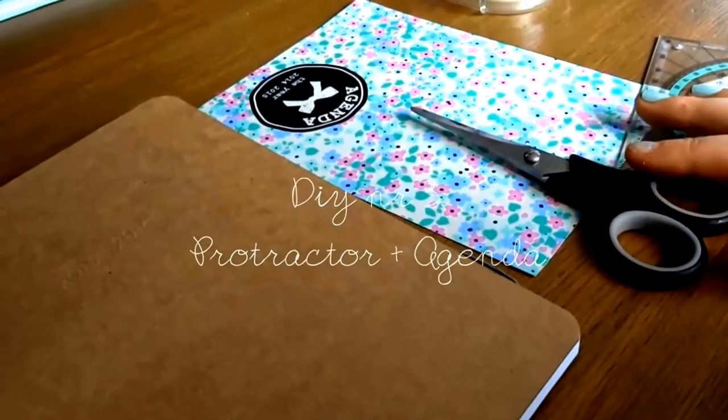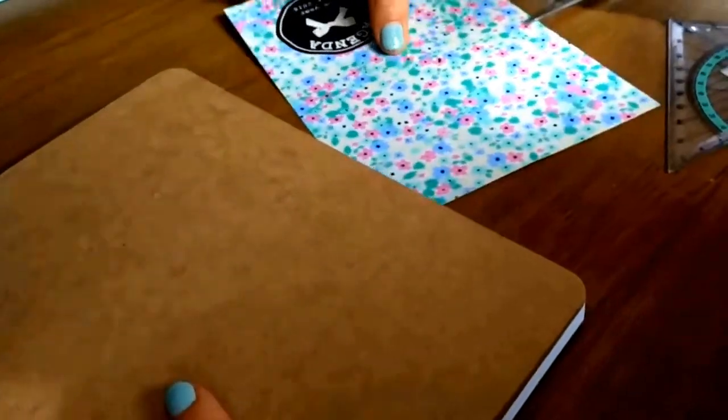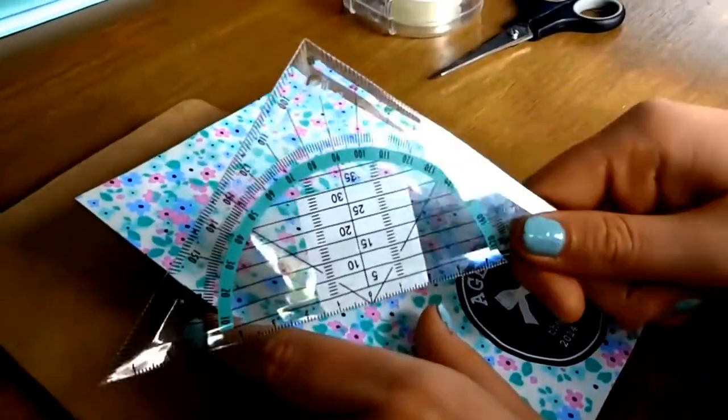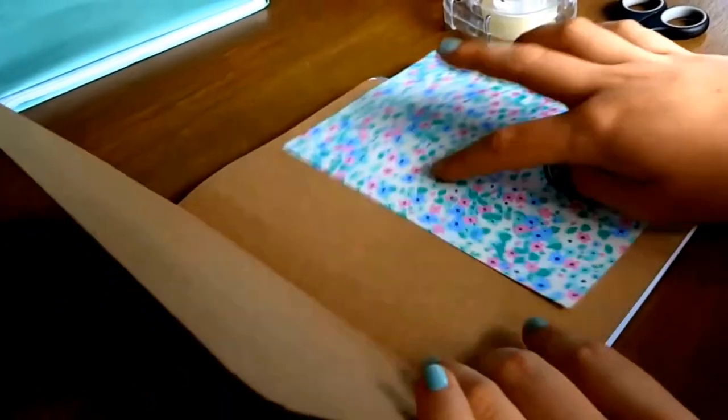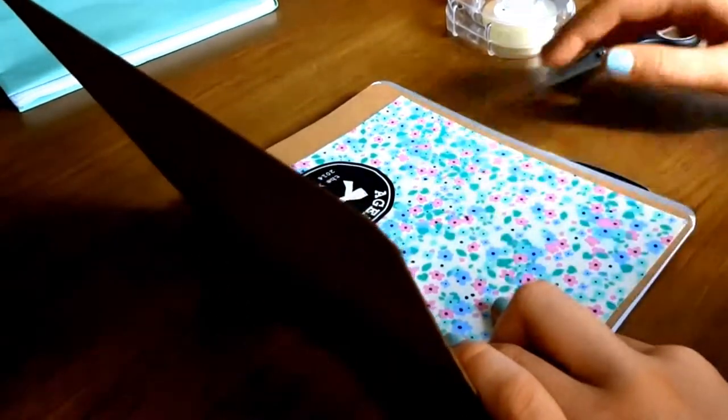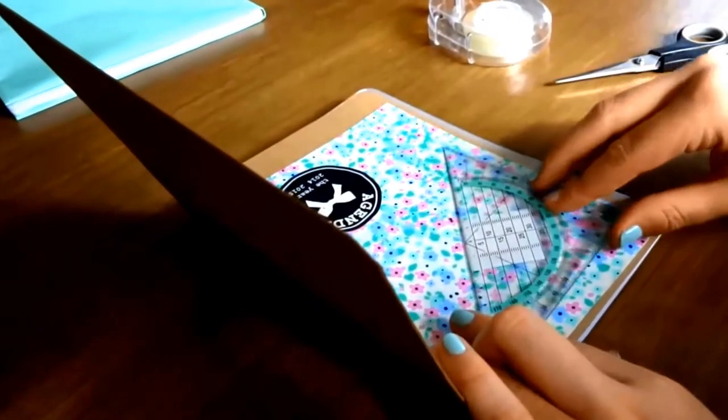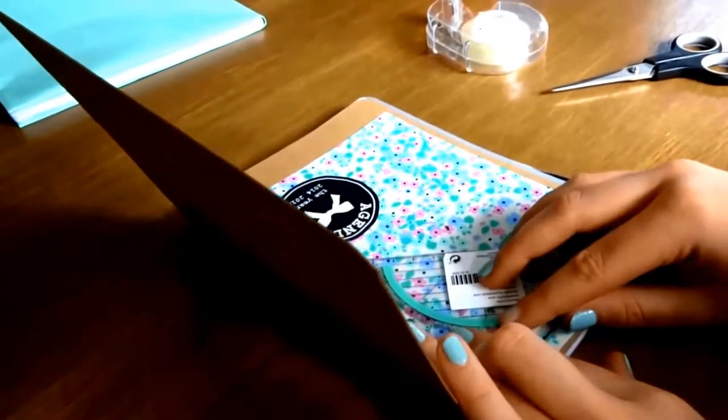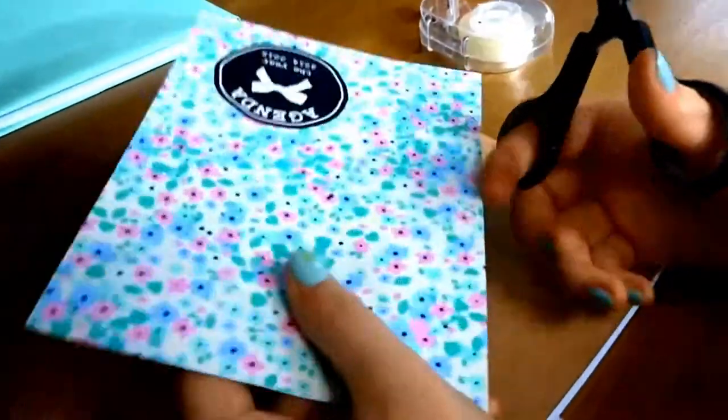The third DIY is a Protractor Agenda one. So I placed this piece of paper in the agenda. Maybe nice to know this was the front of the agenda I had last year, and I cut it in two halves.